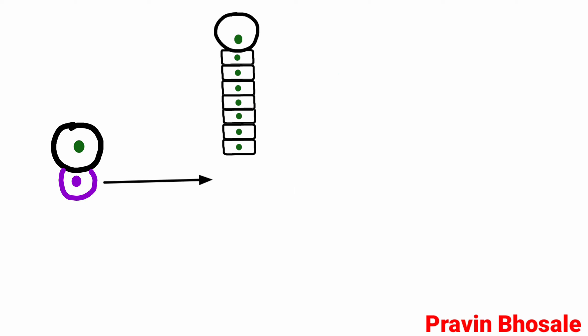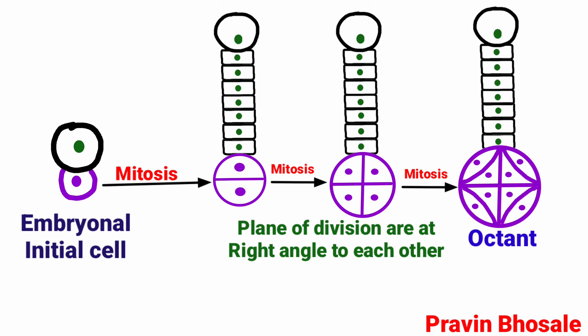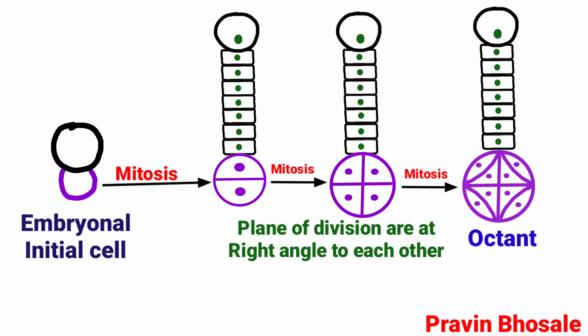Now focusing on the embryonal initial cell: it undergoes three successive mitotic divisions to form an octant, with the planes of division at right angles to each other. So it first forms a two-cell structure, then a four-cell structure, and then an eight-cell structure — that is the octant.